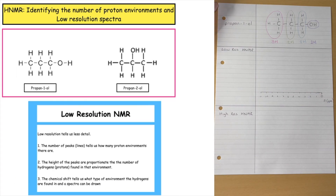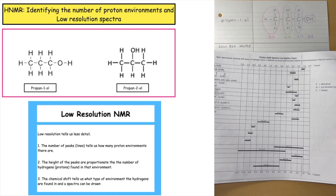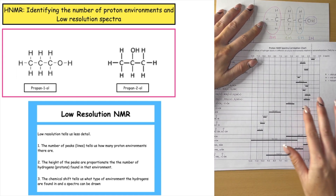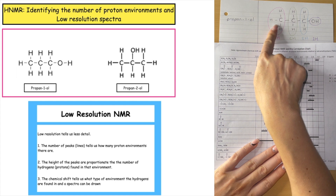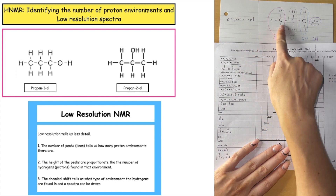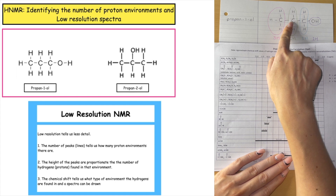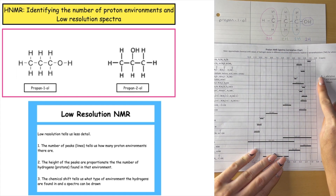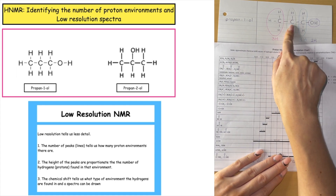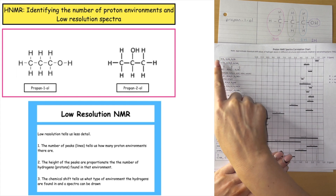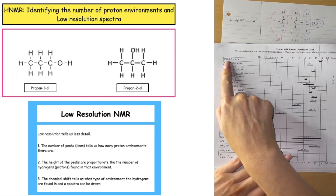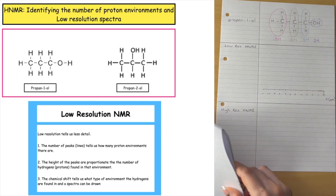Now that we've identified the proton environments, we have to identify the chemical shift for each using our data booklet — page 17 of the higher chemistry data booklet. Looking at the first house, the pink CH3, its neighbour is bonded to a carbon, which is an alkyl group represented by R. This CH3 has only one neighbour, so we're looking for RCH3. The hydrogens bonded to the carbon are shown in bold, emphasising that's the proton environment we're analysing.